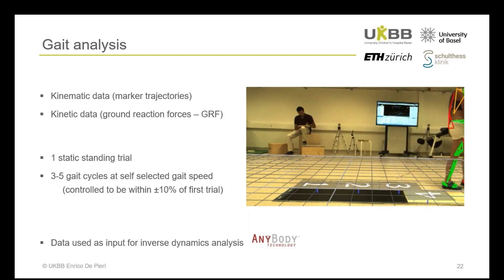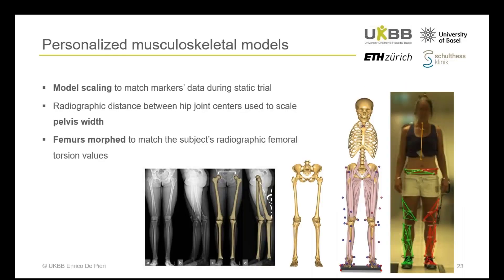The participants underwent three-dimensional gait analysis, and we acquired kinematic and kinetic data for a static standing reference trial and for three to five gait trials at self-selected speed. We used this data as input for an inverse dynamic analysis in the AnyBody modeling system. To generate personalized models, we scaled the generic model to match overall anthropometrics and marker data, then included additional measurements from radiographic images — such as the distance between hip joint centers for pelvic width — and morphed the femoral geometry to match each subject's torsion value.